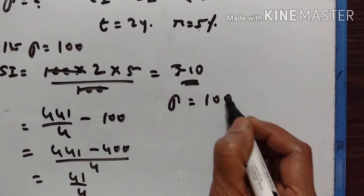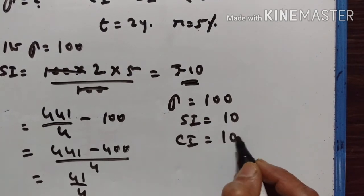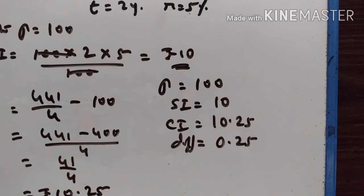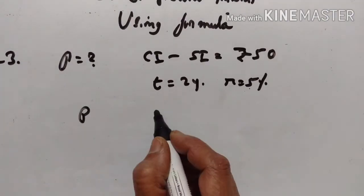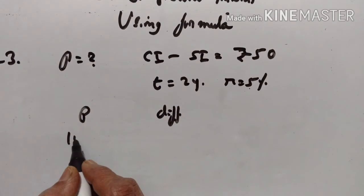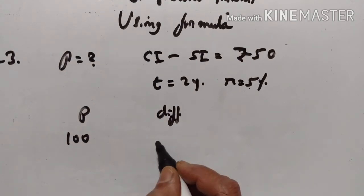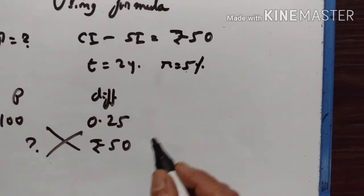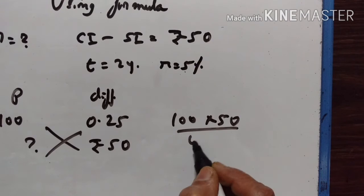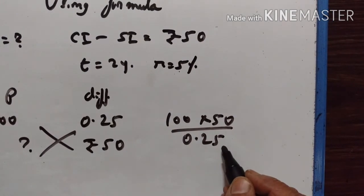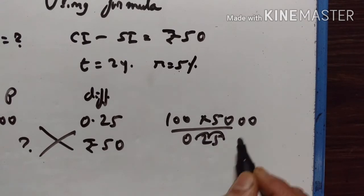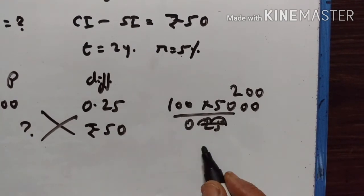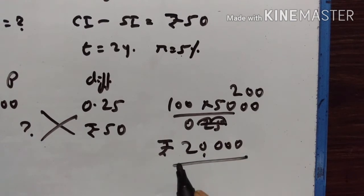When P is equal to 100, simple interest is equal to 10, compound interest is equal to 10.25. Difference is 10.25 minus 10, that is 0.25. When the principal is 100, the difference between compound interest and simple interest is 0.25. When the difference is rupees 50, the principal is 100 into 50 divided by 0.25. Multiplying numerator and denominator by 100, this gives 200 into 100 equal to rupees 20,000. Rupees 20,000 is the principal.